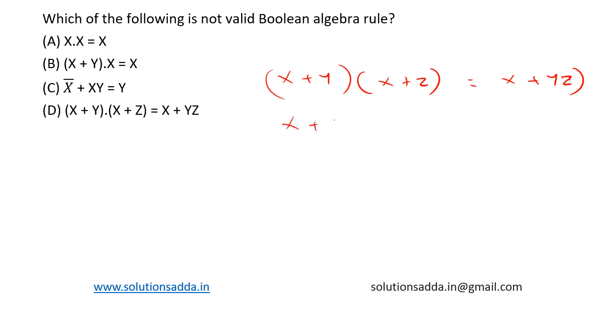X into X plus XZ plus XY plus YZ. Now taking X as common factor from all this, we will get X into (1 plus Z plus Y) plus YZ. This whole term turns to be 1, so we get X plus YZ. So LHS is equal to RHS.